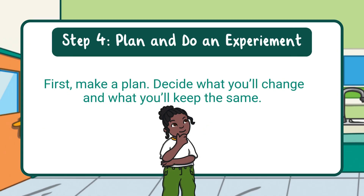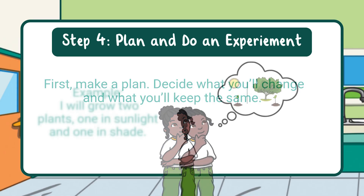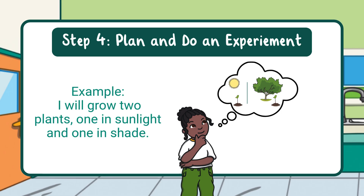Step four: plan and do an experiment. Now it's time to test your hypothesis with an experiment. First, make a plan — decide what you'll change and what you'll keep the same. For example, I will grow two plants: one in sunlight and one in shade. Then carry out the plan to see what happens. Planning ahead makes your test fair and accurate.